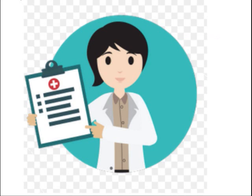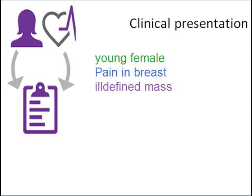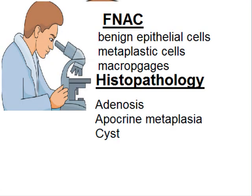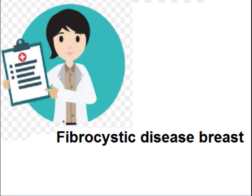A provisional diagnosis was made based on the following features. History: young female patient with pain in the breast and an ill-defined mass on examination. Gross morphology: breast tissue with single or multiple cysts. Microscopy: FNAC showed benign epithelial cells, metaplastic cells, and macrophages. Histopathology revealed adenosis, apocrine metaplasia, cysts, and fibrosis. Final diagnosis: fibrocystic disease of the breast.